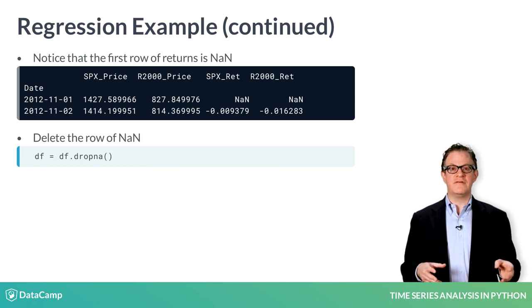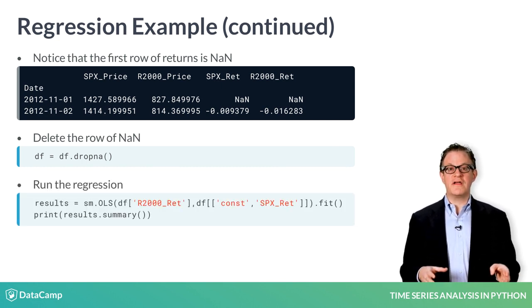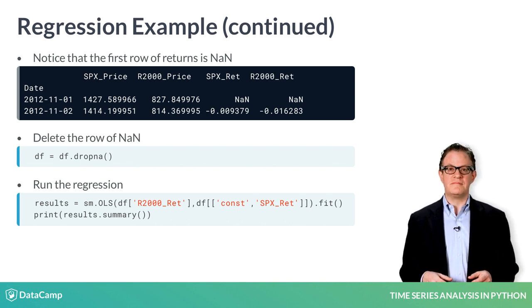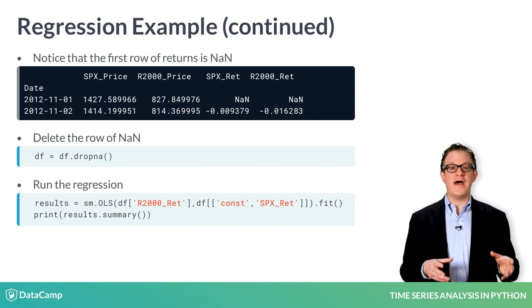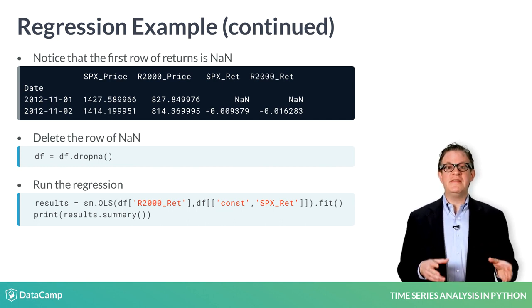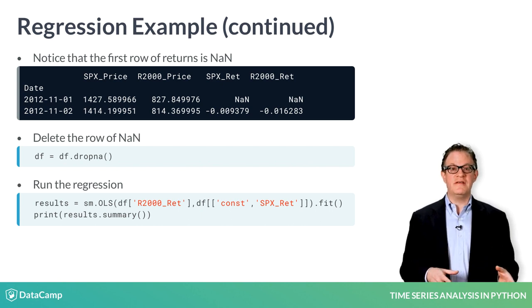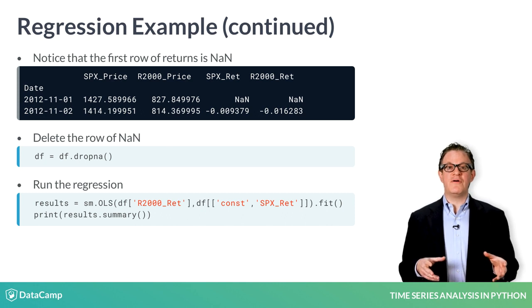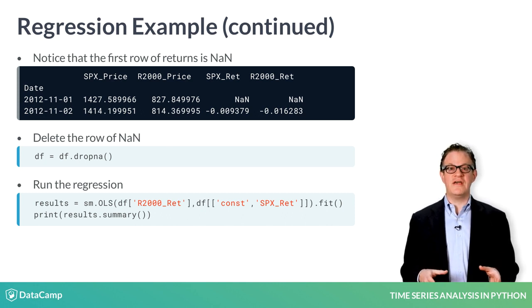You're finally ready to run the regression. The first argument of the statsmodel's regression is the series that represents the dependent variable Y. And the next argument contains the independent variable or variables. In this case, the dependent variable is the R2000 returns, and the independent variables are the constant and SPX returns. The method fit runs the regression, and results are saved in a class instance called results.